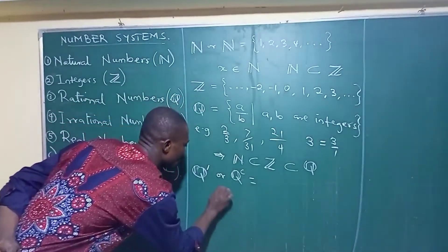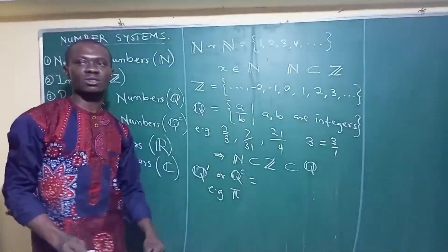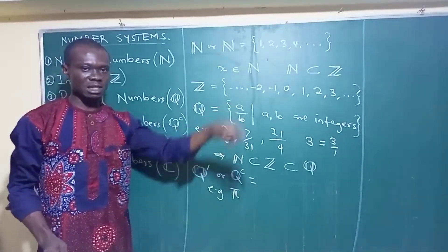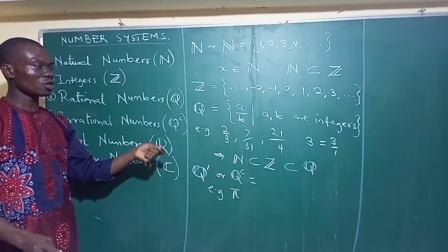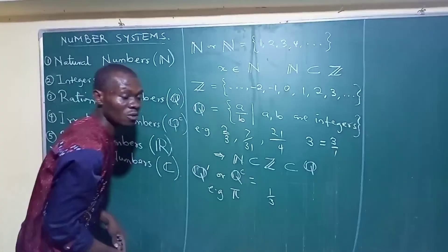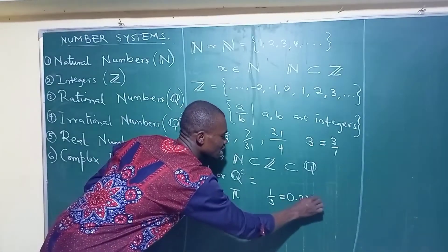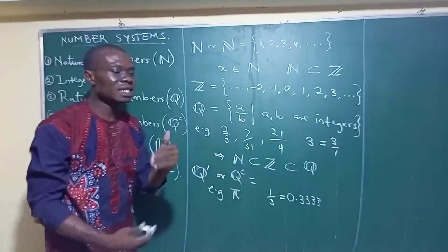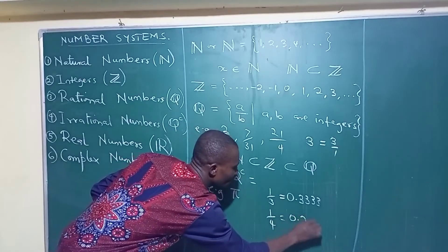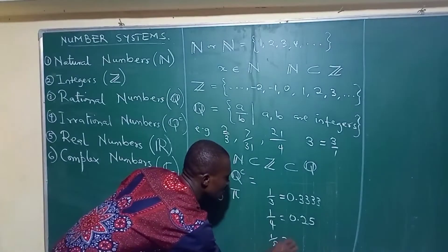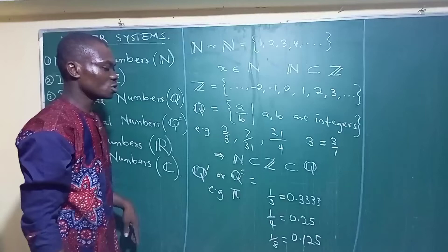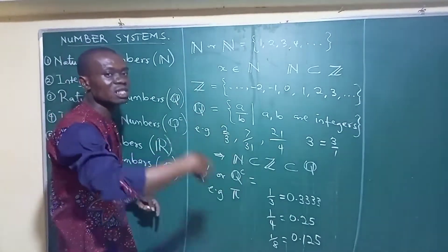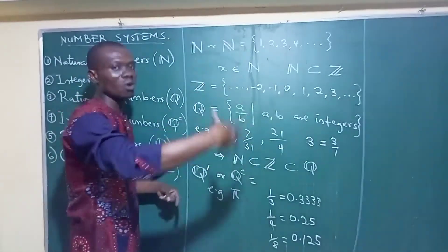An example of irrational numbers is pi. Another way to identify irrational numbers is that when they are in decimal form, they don't have a recurring pattern after the decimal point. For rational numbers, like 1 over 3, you get 0.3333 and it continues — you can see that 3 is recurring. For a rational number that terminates, like 1 over 4 equals 0.25 or 1 over 8 equals 0.125, it stops at a point. If it doesn't stop, then for it to be rational it must keep repeating a particular set of digits.